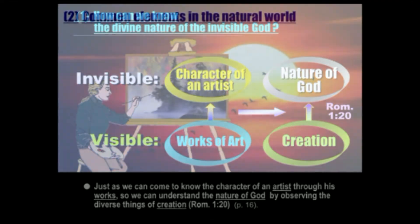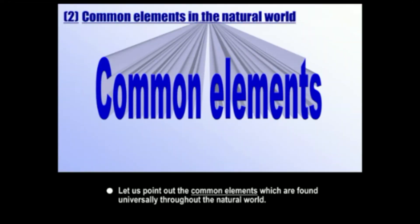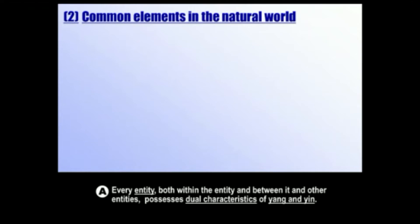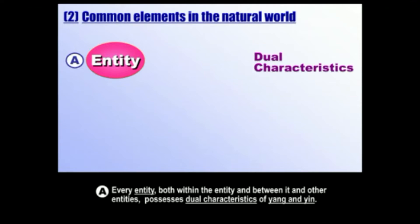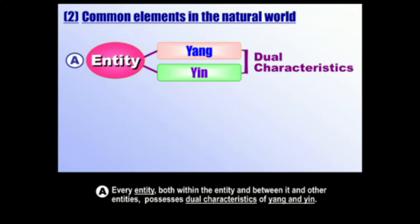The way the Unification Principle approaches this is we look at what are the common elements we find throughout the natural world. First, we look and see that everything in creation comes with two qualities or aspects. Every entity, both within itself and in relationships with other beings, possesses a set of dual characteristics that the principle refers to as yang and yin. This is an oriental concept. For Westerners, yang can be understood as positivity, positive electrical charge, or masculinity, and yin as negative electrical charge or femininity — positive and negative, male and female qualities.